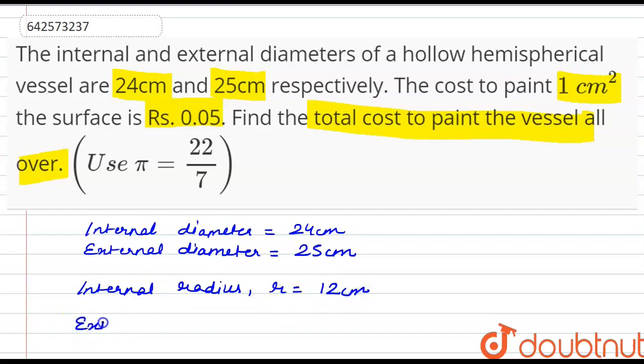And the external radius, that is capital R, is 25 by 2, which is 12.5 cm.